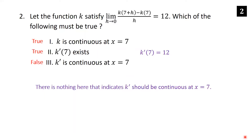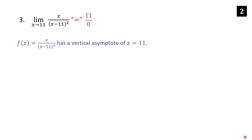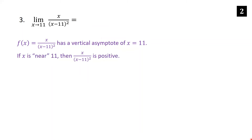Find the limit as x→11 of x / (x − 11)². The function x / (x − 11)² has a vertical asymptote at x = 11, because plugging in 11 gives 11 in the numerator and (11 − 11)² = 0 in the denominator — a nonzero numerator over zero guarantees a vertical asymptote.